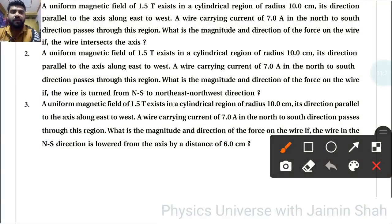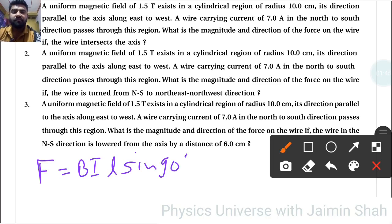Now second question: what is the magnitude and direction of the force on the wire if wire is turned from north to south to northwest direction? So again same formula, F equals BIL sine theta and theta is 90 degrees as previous one.